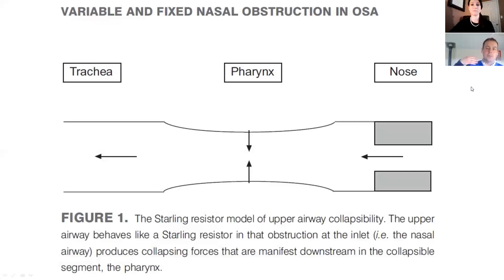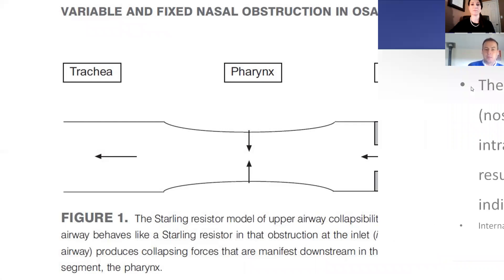If the upper airways collapse, if the throat collapses — and the upper airway is a collapsible tube — the individual is going to stop breathing, and that's going to manifest as obstructive sleep apnea.